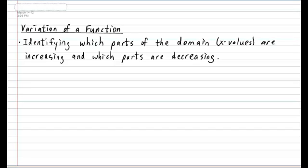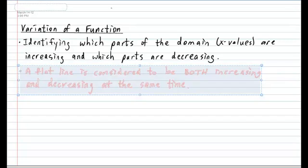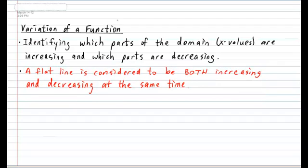Now before we take a closer look at what is meant by increasing and decreasing, I need to get a very weird fact out of the way. It involves a flat line and the question is: does a flat line represent a line that is sloping upwards, in other words increasing, or is it sloping downwards, in other words decreasing? Well believe it or not, a flat line is considered to be both increasing and decreasing at the same time.